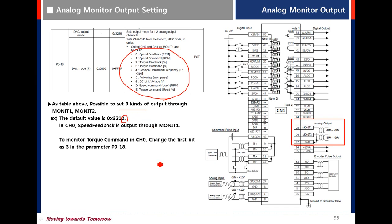To monitor torque command in Channel 0, change the first bit to 3 in parameter P018.